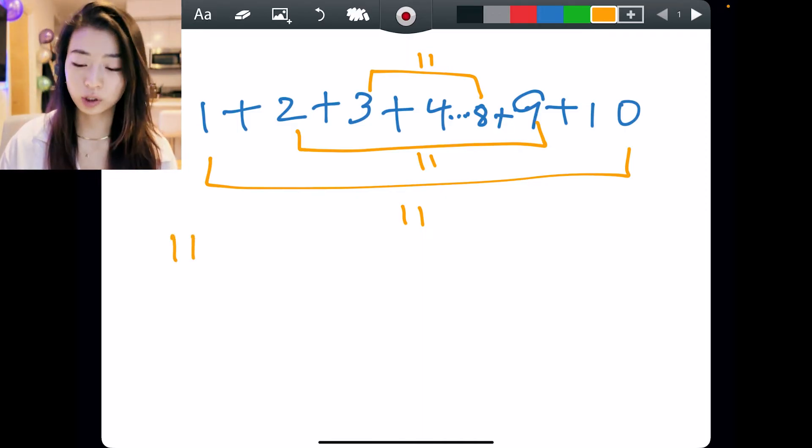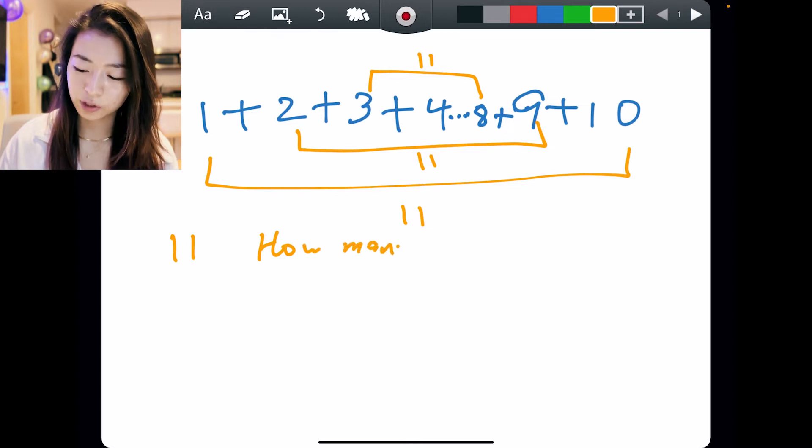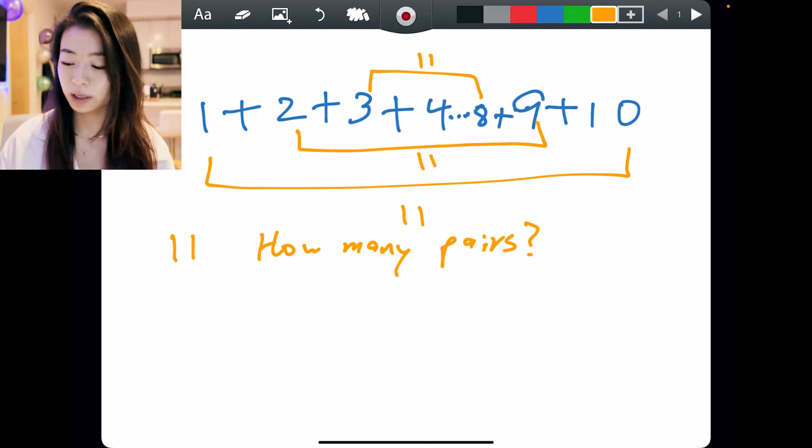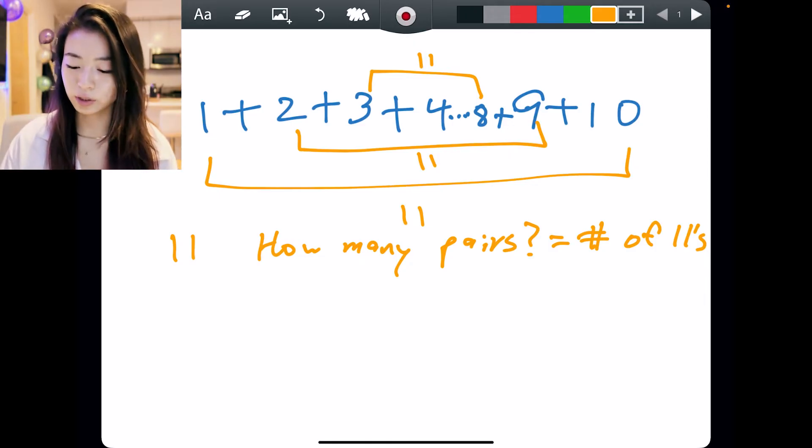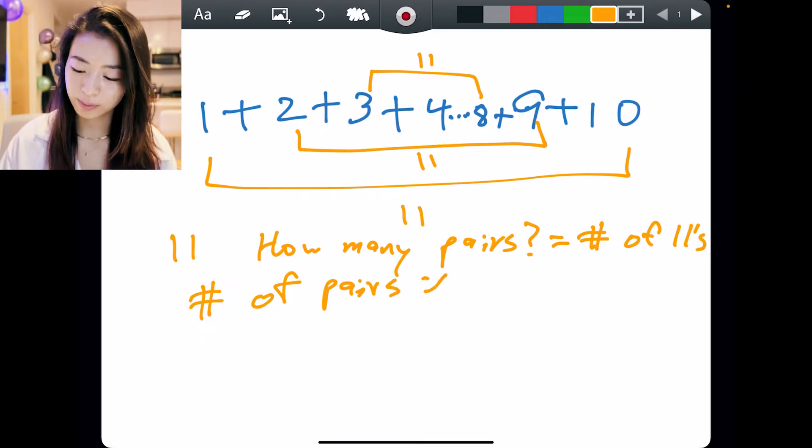But then it becomes a question of how many pairs do we have? Because that will be how many 11s we have to add together, right? Because then we just do the number of pairs times 11 for the answer.